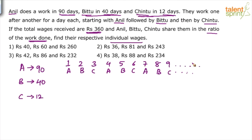You can go by unitary method where on the first day 1 by 90th of the work is done. Anil can do 1 by 90 of the work in 1 day, Bittu can do 1 by 40 of the work in 1 day, Chintu can do 1 by 12 of the work in 1 day. But let us do it in a different way which makes it much simpler.